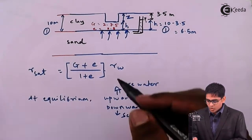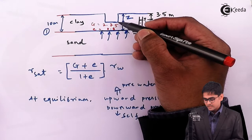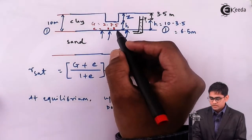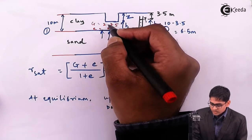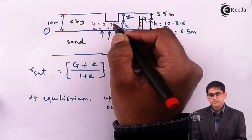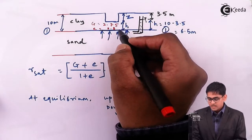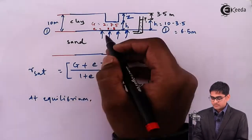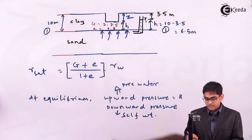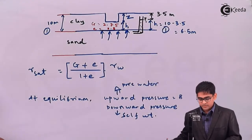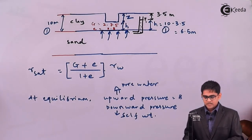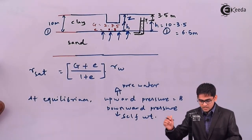If the excavation goes beyond 6.71 meters, the artesian pressure becomes dominant, resulting in upward flow of water. The soil in that region will fail — a phenomenon related to hydraulic gradient, which we will discuss in a subsequent chapter.